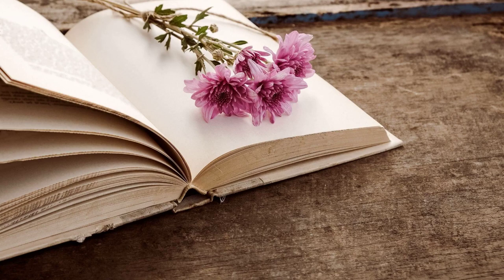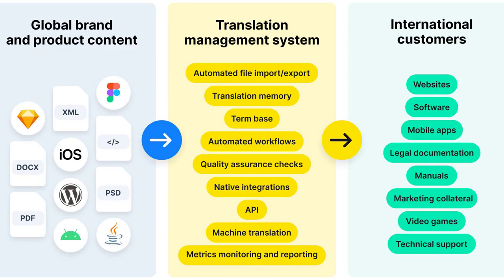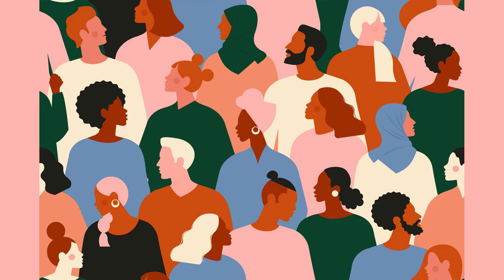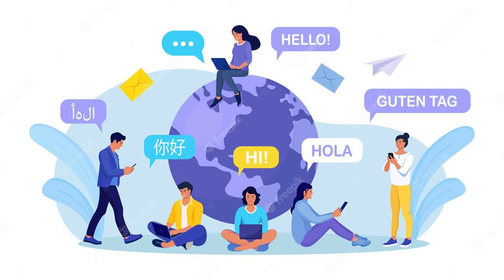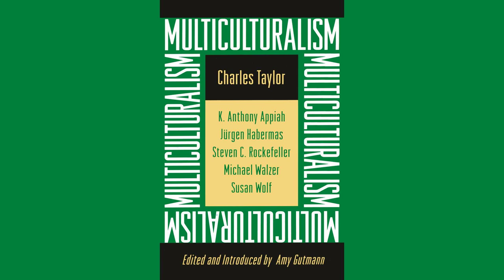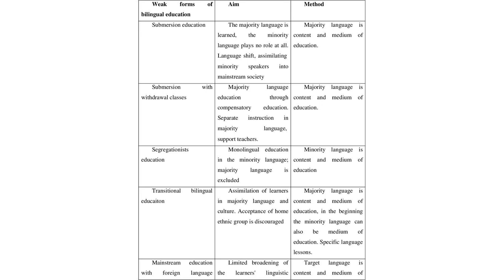Translation plays a crucial role in the dissemination of migrant literature. Translating works from one language to another allows for the sharing of diverse perspectives and the promotion of cross-cultural understanding. However, migration also presents challenges for language and literature. Language barriers can hinder communication and limit access to literary works, particularly for migrants who are not proficient in the language of their new country. Cultural assimilation can also impact language, as migrants may feel pressure to adopt the dominant language and literary traditions, leading to the loss of their native language.